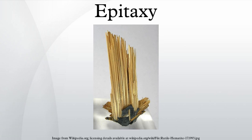Isomorphic minerals — minerals that have the same structure — may have epitaxic relations. An example is albite (NaAlSi3O8) on microcline (KAlSi3O8). Both these minerals are triclinic with space group 1 and similar unit cell parameters: for albite, a=8.16Å, b=12.87Å, c=7.11Å, α=93.45°, β=116.4°, γ=90.28°; and for microcline, a=8.5784Å, b=12.96Å, c=7.2112Å, α=90.3°, β=116.05°, γ=89°.